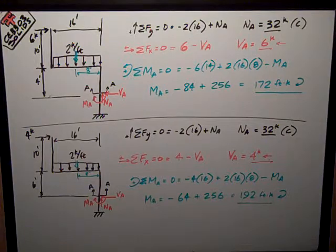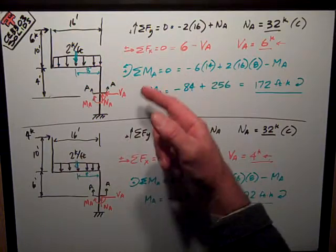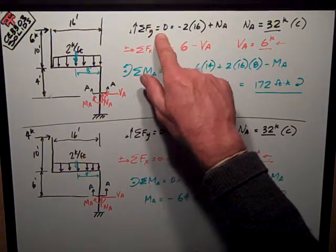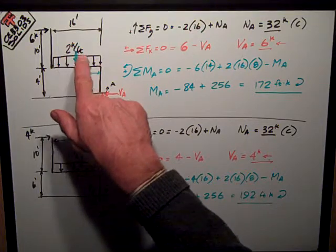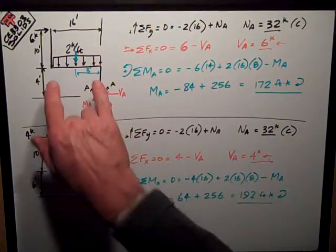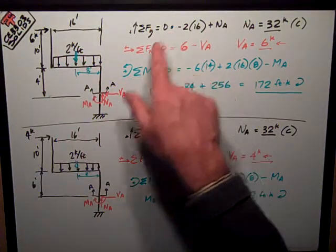Really in the sum of the forces in the y direction, all I have in the y is this two kips per foot distributed, times 16 feet.